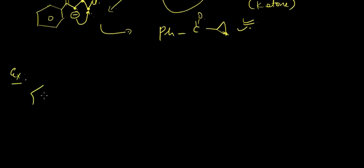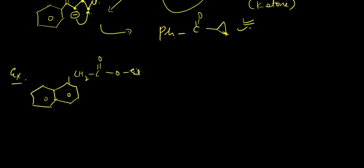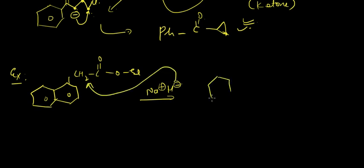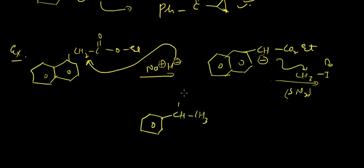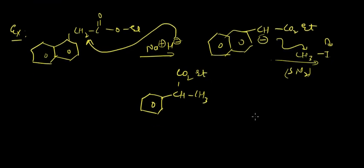Let's take another example. Here we have two fused benzene rings substituted with a CH2-C(=O)-OEt group. Next, we react with CH3I and an SN2 reaction takes place where CH⁻ attacks on CH3 and I⁻ is released, giving us the alkylated product with CH-CH3 and CO2Et.